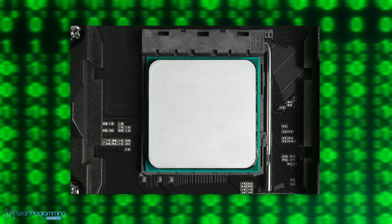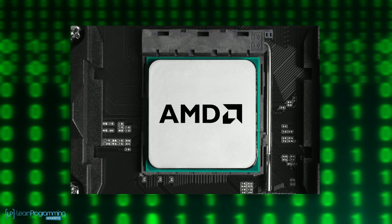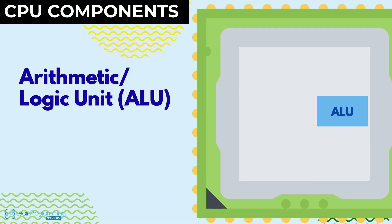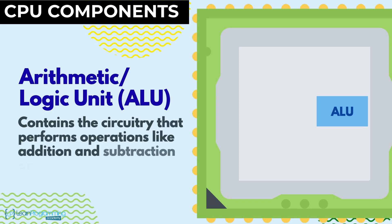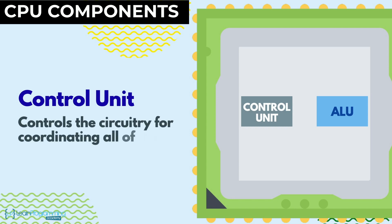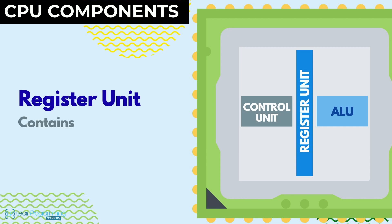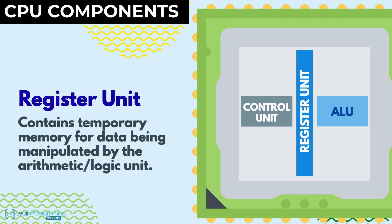Some common companies that produce these CPUs are Intel and AMD. The CPU consists of three parts: the arithmetic logic unit, which contains the circuitry that performs operations like addition and subtraction on data; the control unit, which controls the circuitry for coordinating all of the computer's activities; and the register unit, which contains temporary memory for data being manipulated by the arithmetic logic unit.